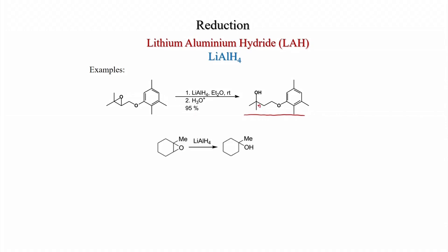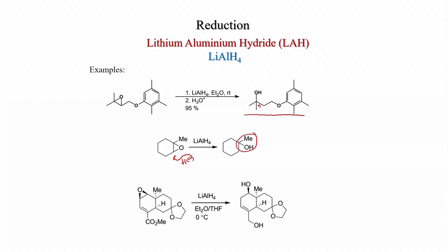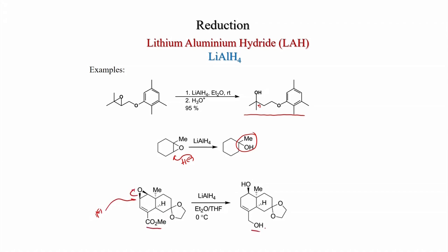Examples: a cyclopentane epoxide treated with LiAlH4 gives the alcohol with a quaternary center. A cyclohexane epoxide also gives a quaternary center. In a complex molecule, hydride delivery occurs from one face giving the secondary alcohol, and the ester group is simultaneously reduced to the alcohol.